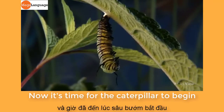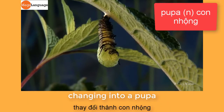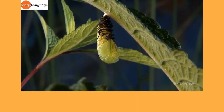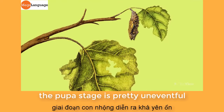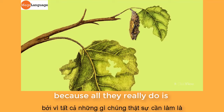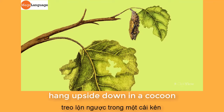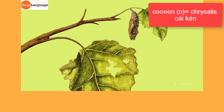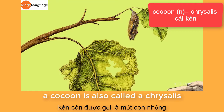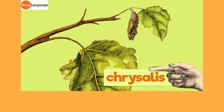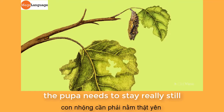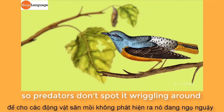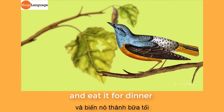Now it's time for the caterpillar to begin changing into a pupa. The pupa stage is pretty uneventful because all they really do is hang upside down in a cocoon. A cocoon is also called a chrysalis. The pupa needs to stay really still so predators don't spot it wriggling around and eat it for dinner.